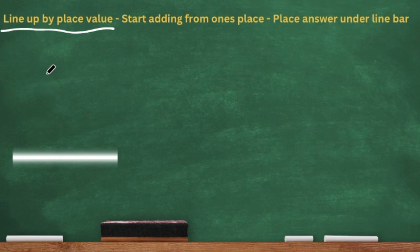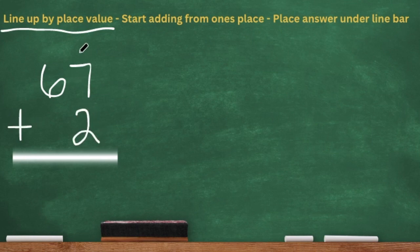We have line up by place value. I'm going to add 67 plus 2, and as you can see, I lined them up by place value. This is the ones place, and then this is the tens place.